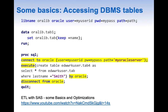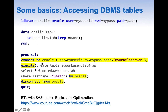DBMS tables can be accessed in two ways. The first one is by the libname method. First we need to give the libname, then a name, followed by the engine we are going to use, and the credentials and path. This may differ a little bit from database to database, especially the credentials part. Once we have defined this libname, we can access the database table.